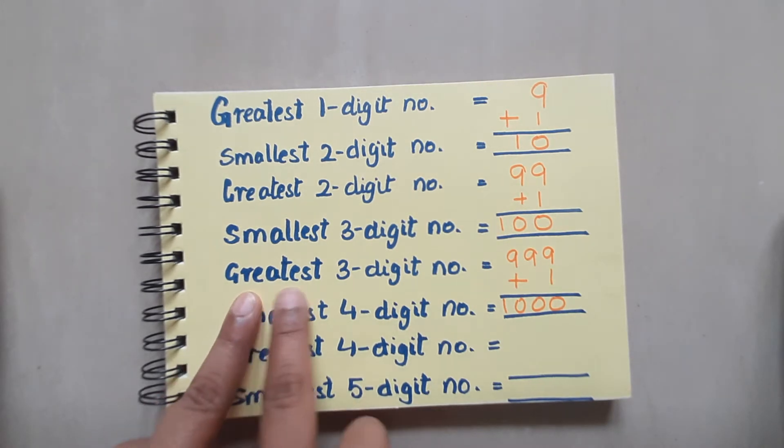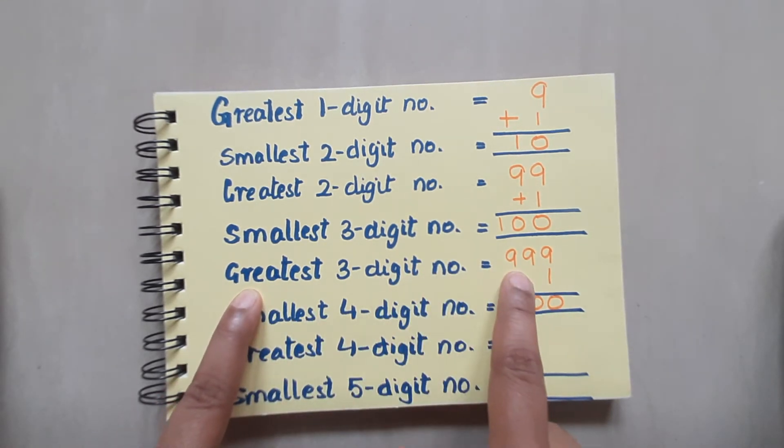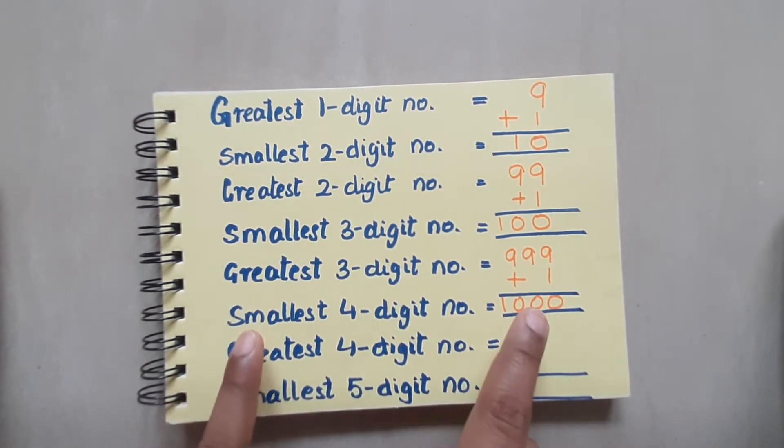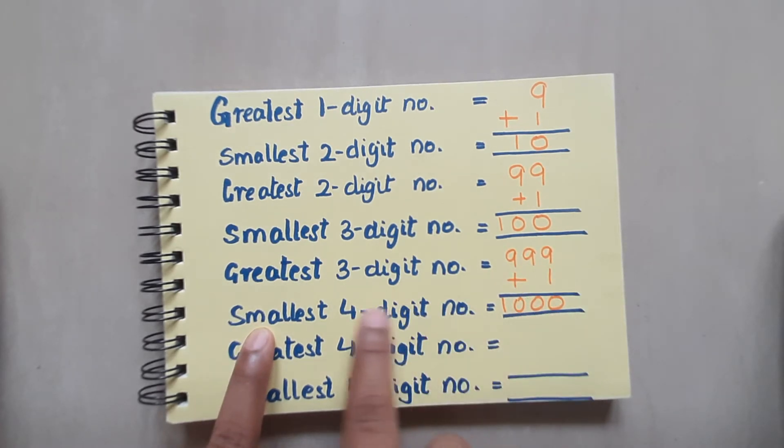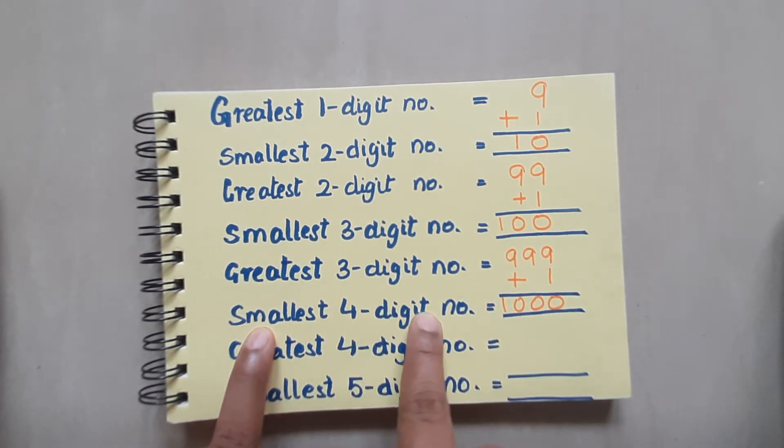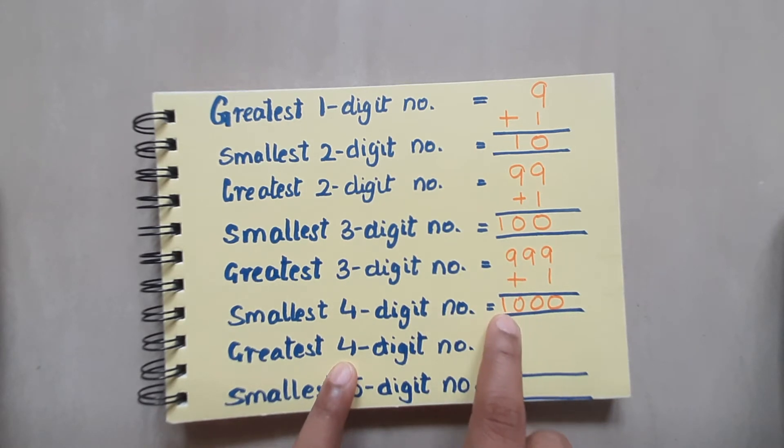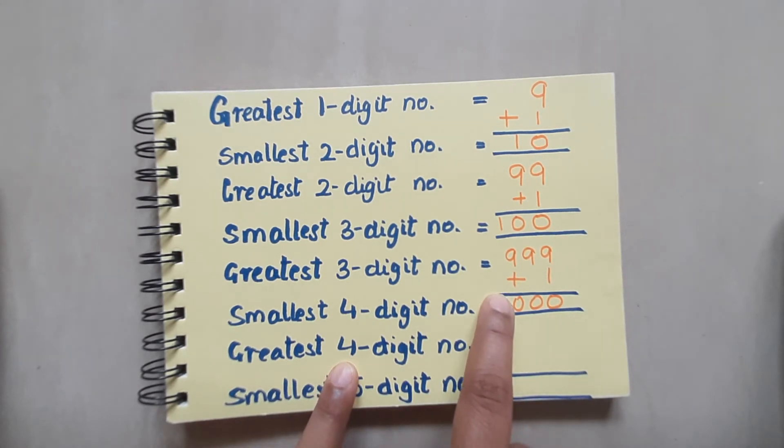Similarly, if I talk about greatest 3 digit number, it is 999. And if I add 1, if we move ahead in the counting, I get the smallest 4 digit number. And this 4th digit has the place of 1000s.